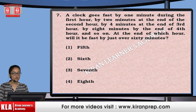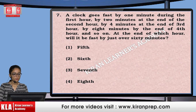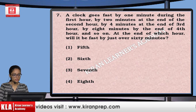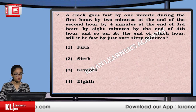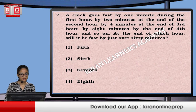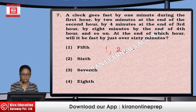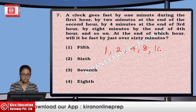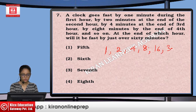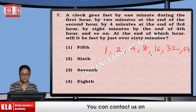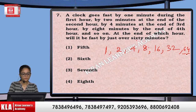Next: A clock goes fast by 1 minute during the 1st hour, 2 minutes at the end of the 2nd hour, 4 minutes at the 3rd, then 2, then 4, then 8. So it is being doubled: 1, 2, 4, 8, 16, 32, 64. It is asking about when it exceeds 60 minutes, which means 64 — so it is the 7th hour. That means option number 3.